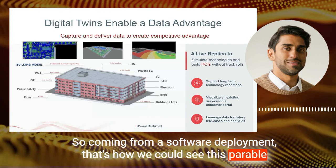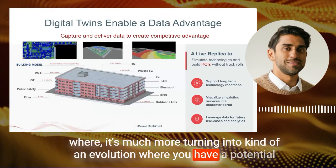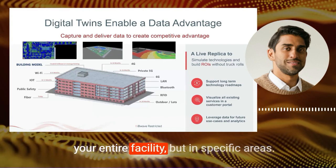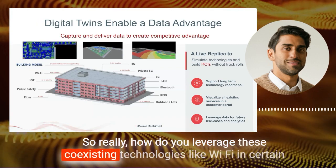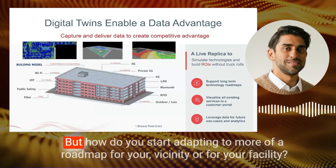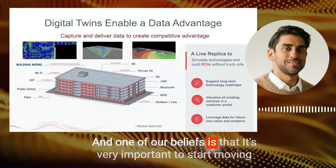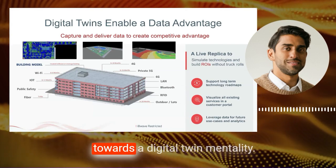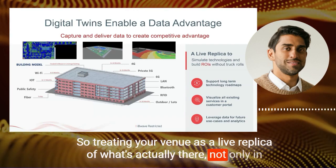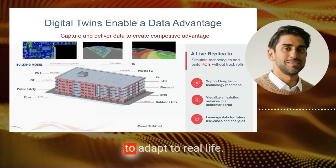Coming from a software deployment perspective, this is evolving more into a roadmap model. Maybe it's not about deploying complete 5G to your entire facility, but in specific areas. How do you leverage coexisting technologies like Wi-Fi in certain areas, maybe 5G in the outdoor parking lot where there's a justifiable ROI? How do you adapt to a roadmap for your facility? One of our beliefs is that it's very important to start moving towards a digital twin mentality — treating your venue as a live replica of what's actually there, continuously evolving to adapt to real life.